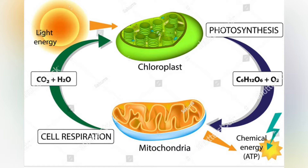The absorption peaks of chlorophyll A are at 465 nm and 665 nm. Chlorophyll A fluoresces at 673 nm and 726 nm.